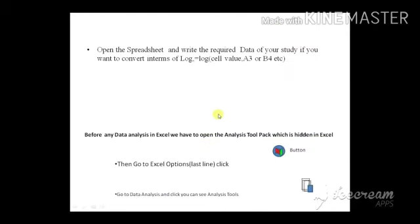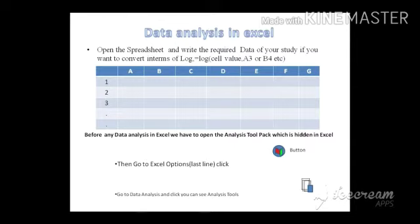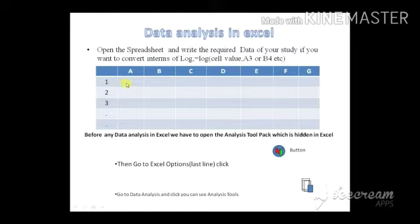Before working with data, our first task is to learn how to handle Excel, because Excel is available to almost all researchers. Sometimes SPSS, EViews, Stata, and other software may not be available. In Excel, we can see the horizontal columns and vertical rows. To convert a variable into log form, write the value in a cell, then in the next cell type the equals sign, write LOG, and reference the cell — for example, =LOG(A2) — and press Enter to get the log value.